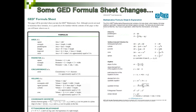Now that we've reviewed the shapes, let's note some changes in the GED formula sheet. One major change is that words are no longer written out in the formulas — on the left we have the current GED formula sheet, and on the right the 2014 one, which uses only variables and no words. Some formulas have been completely removed; I'll highlight in yellow those that have been removed, and green arrows will show ones still provided but in a different format.